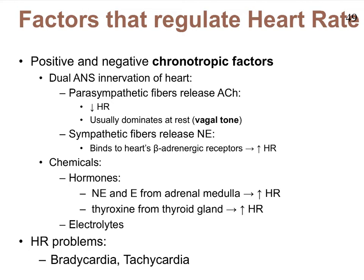First of all, the innervation of the heart itself is going to impact how fast the heart beats. We've learned already how parasympathetic fibers can slow down the whole depolarization process, and of course that ultimately leads to a slower heart rate. It's the parasympathetic fibers that predominate at rest, and we talk about the heart's vagal tone.